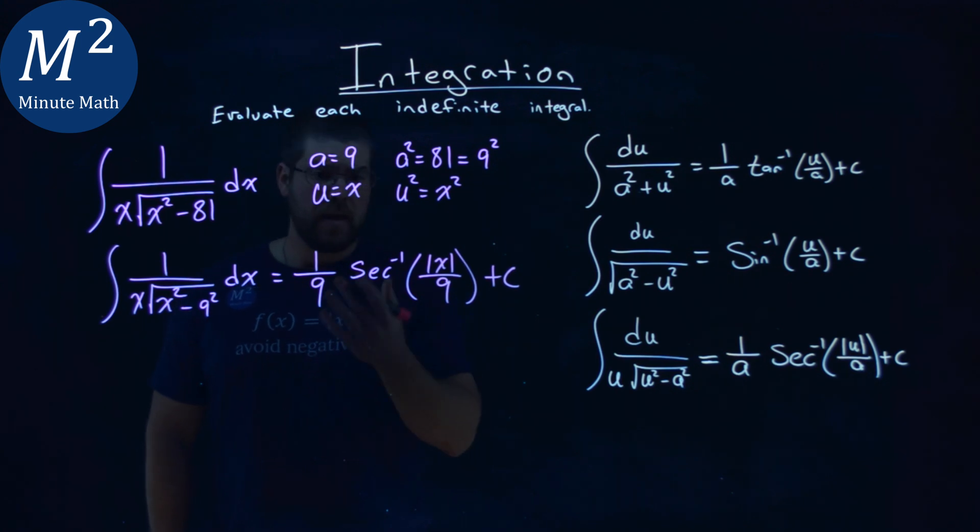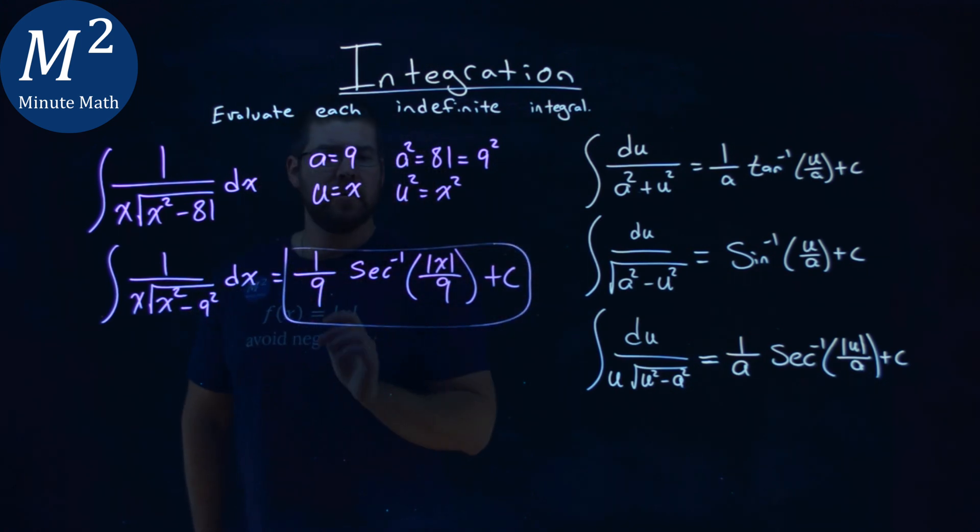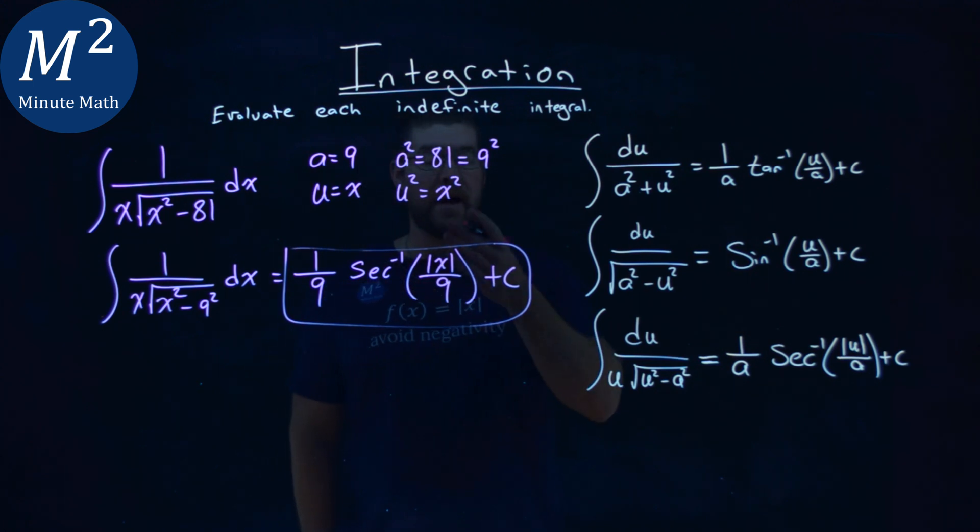Don't forget it. And that's it. Our final answer here is just 1 over 9 arc secant of the absolute value of x over 9 plus c.